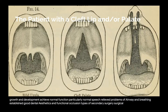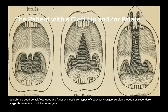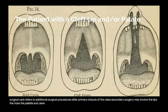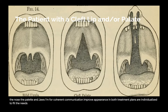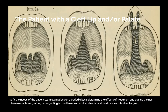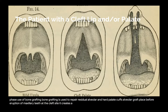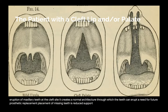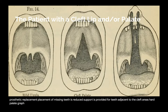Types of secondary surgical procedures: secondary surgical care refers to additional procedures after primary closure of the clefts, and may involve the lips, nose, palate, and jaws. Objectives are to improve function for coherent communication and improve appearance. Treatment plans are individualized and team evaluations on a periodic basis determine the effects of treatment and outline the next phase. Use of bone grafting: bone grafting is used to repair residual alveolar and hard palate clefts. An alveolar graft placed before eruption of maxillary teeth at the cleft site creates a normal architecture through which teeth can erupt, reduces the need for prosthetic replacement of missing teeth, and provides support for teeth adjacent to the cleft. Hard palate grafts provide closure of oronasal fistula and help relieve a compromised airway.